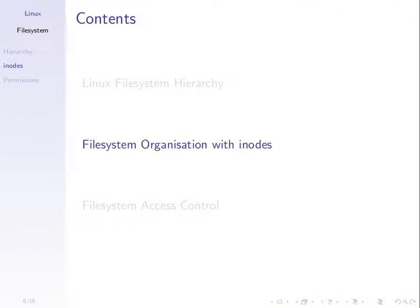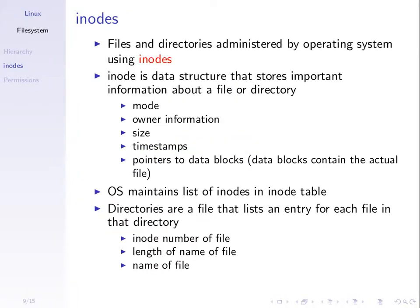What we want to focus on is what we mean by files and directories and then get to file system access control — how do we implement an access control system on our file system? The file system is organised with what's called inodes. The operating system keeps track of all files and directories using inodes.